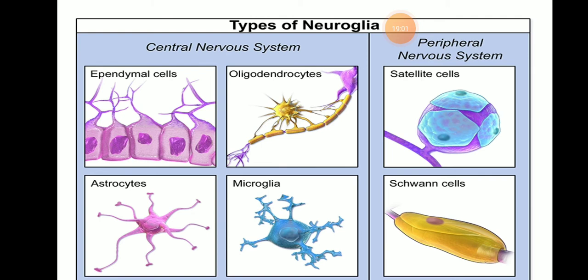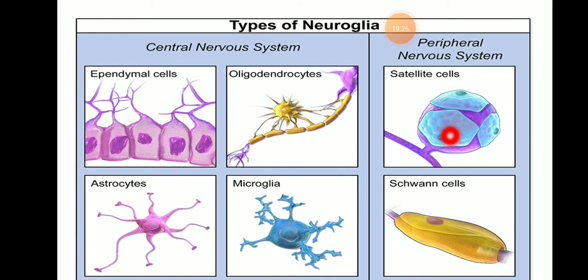Neural cells present in the peripheral nervous system are again of two types: Schwann cells, which are present in the peripheral nervous system, and satellite cells. These different types together constitute the neuroglia of the nervous system.